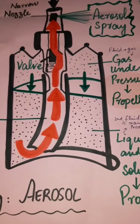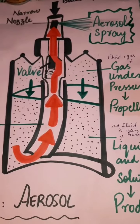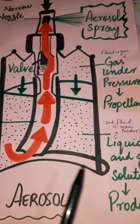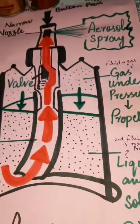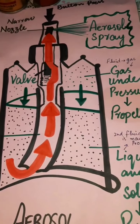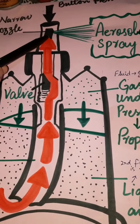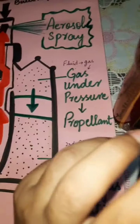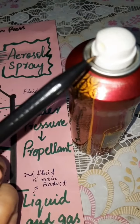Now let's see how aerosols work. As you can see in the picture, I have made a diagram showing an aerosol can or bottle. The diagram shows the construction — how we are using the nozzle. We can see here we have a nozzle and a press button.